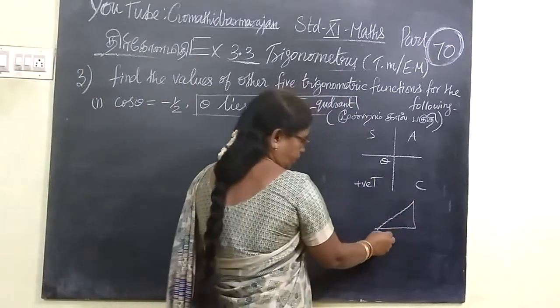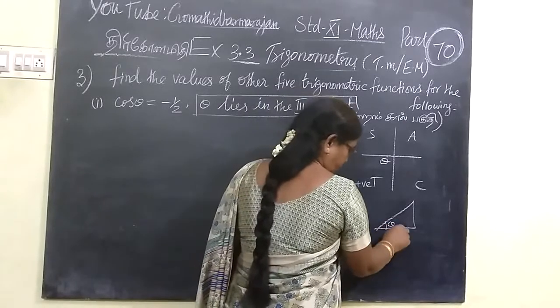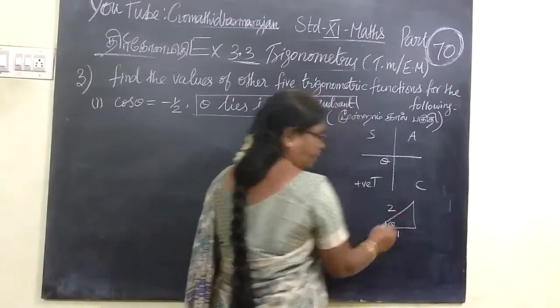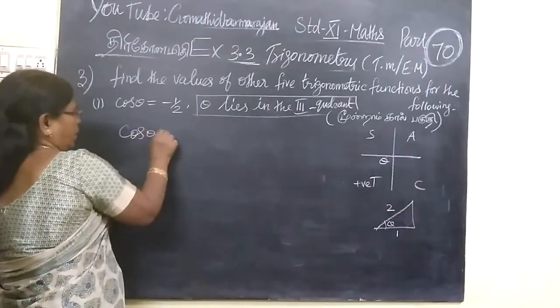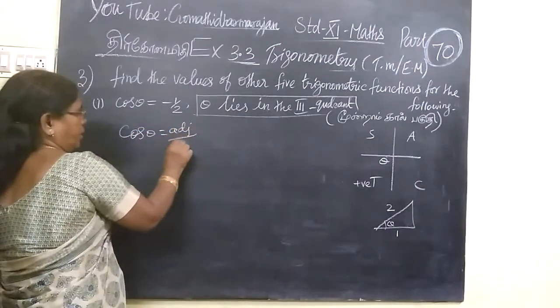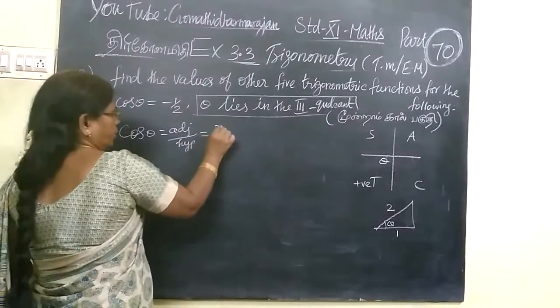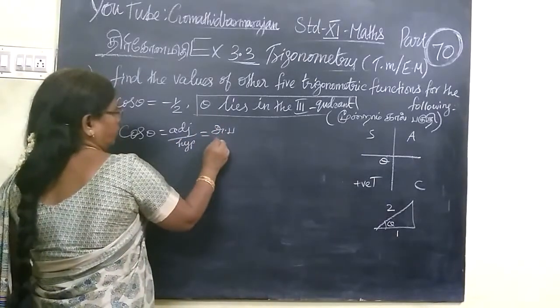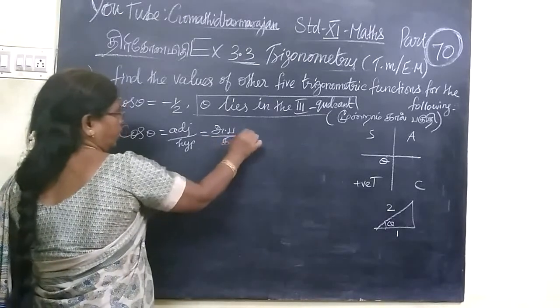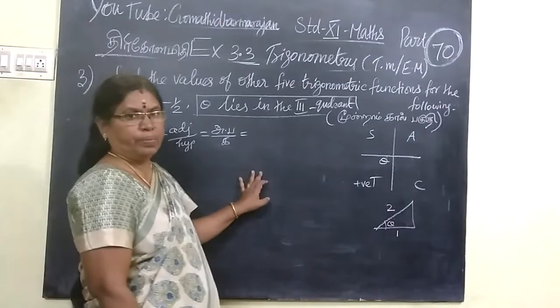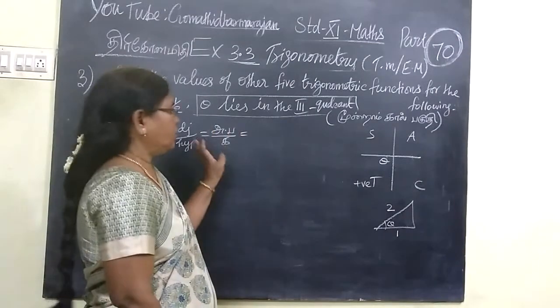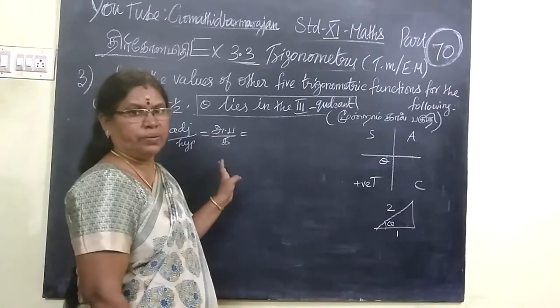Cos theta is the adjacent by hypotenuse. Cos theta equals, we know adjacent by hypotenuse. Do not need to be the standard signal. We have to use this diagram. Because the standard signal is broken. We can see this formula.